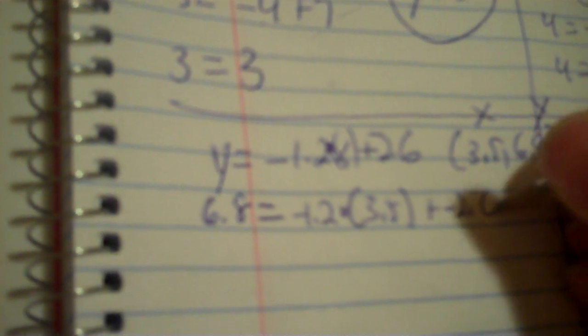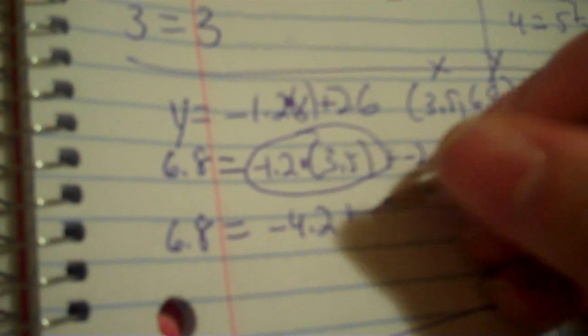Okay, next one. Y equals negative 1.2x minus 2.6. And I get decimals 3.5 and 6.8. You need to lose the y and put 6.8. So you've got times. I hate that minus. Make it plus negative. And you are going to replace the x with 3.5. So negative 1.2, 3.5 plus negative 2.6. So line up your equals. You have 6.8. You do the times first.